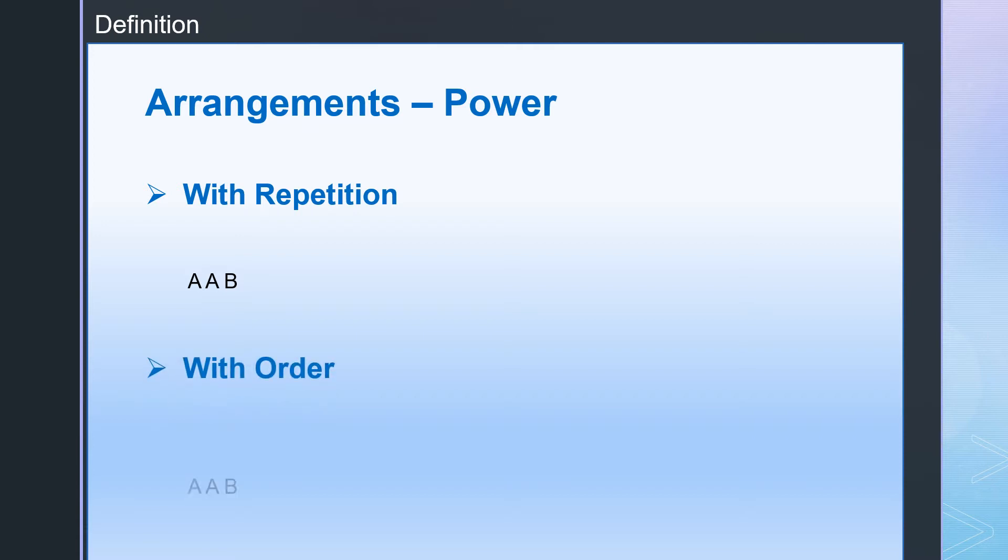Order matters. This is AAB. Then ABA is considered a different thing. Although they have two A's and one B, different arrangements are considered as another way.